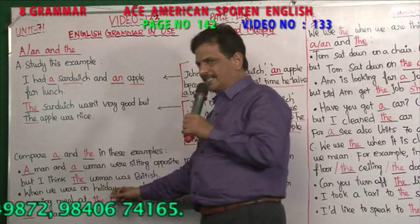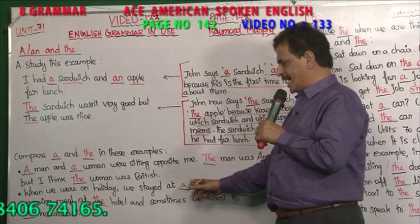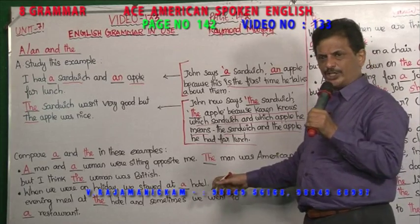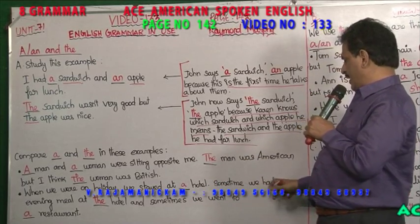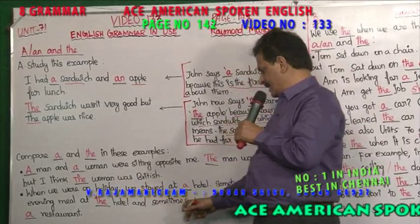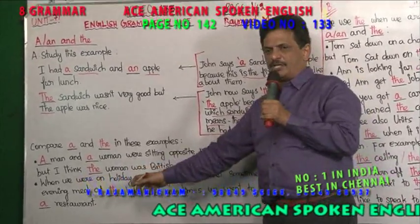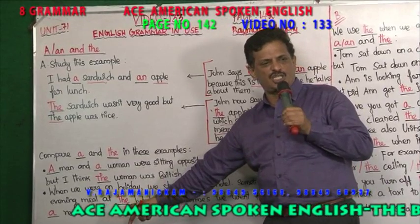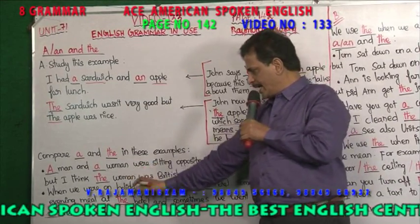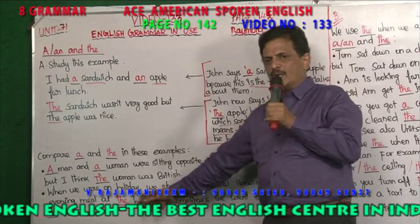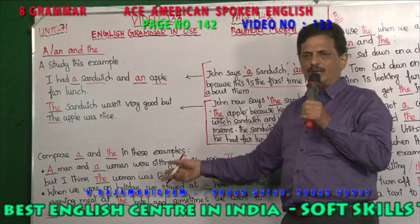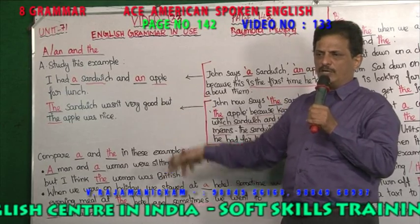When we were on holiday, we stayed at a hotel. One hotel. Sometime we had our evening meal at the hotel, and sometimes we went to a restaurant. First time you are mentioning, so you are using 'a restaurant'. Hotel — first time when you are mentioning, you are using 'a hotel'. Then after that, once again you want to mention about that particular hotel, you are using 'the hotel', because the listener knows which hotel you are mentioning.